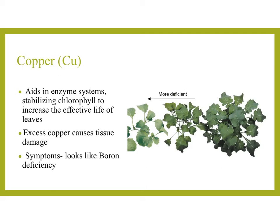Copper — the element symbol is Cu on the periodic table. Copper aids in enzyme systems and stabilizes the chlorophyll to increase the effective life of the leaves. Excess copper will cause tissue damage, and the symptoms look like boron deficiency. The more deficient the plant, the less green and bright it is — meaning the greener and brighter the leaf, the more effective it is at photosynthesis, because that means there is more chlorophyll.